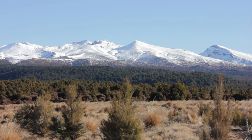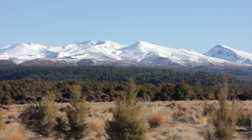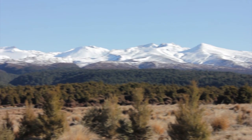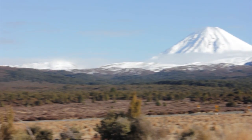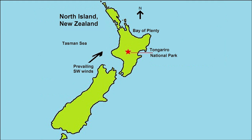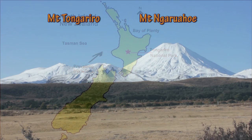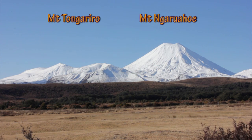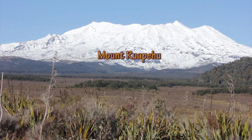Today we are looking at the spatial variations of vegetation that exists in a volcanic landscape. Our case study is the magnificent landscape of the Tongariro National Park in New Zealand. This landscape has numerous volcanoes including Mount Tongariro, Mount Neerahaui and Mount Ruapehu.